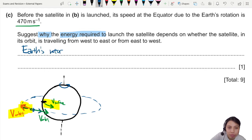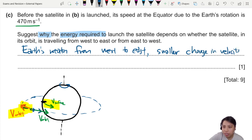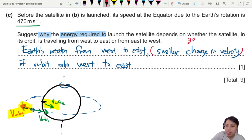So the Earth's rotation is rotating from west to east. So it will be easier if your satellite is also rotating west to east. You don't need so much energy to get it up in orbit. So you can say there's a smaller change in velocity if the orbit is also the same, also west to east. Other terms you could use here instead of smaller change in velocity, you could talk about a smaller gain in energy. You don't need so much energy to change the direction. Or you can say a smaller change if the orbit is the same direction as Earth's rotation.